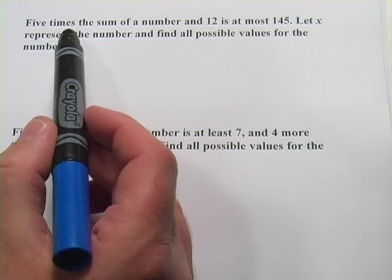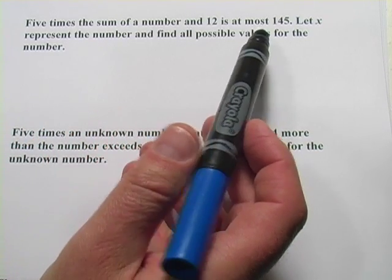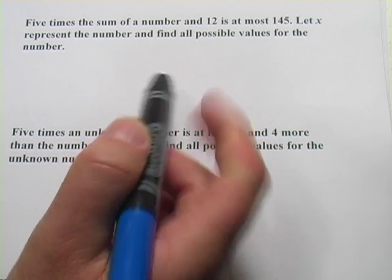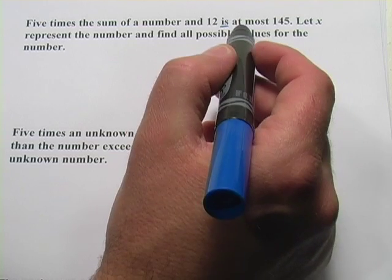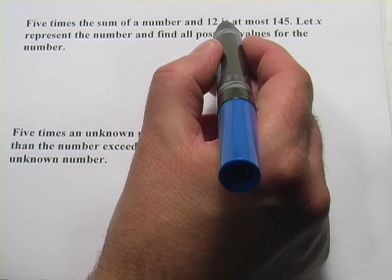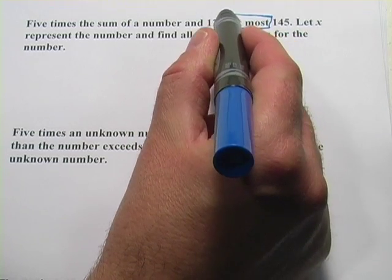The first one says, five times the sum of a number and 12 is at most 145. Well, when you see is, that's usually a key that the inequality is here. And it says, is at most.